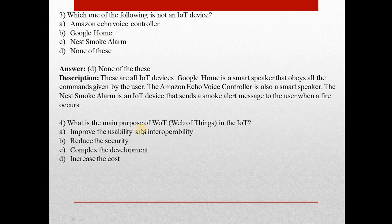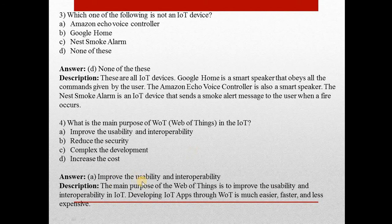Question four: What is the main purpose of WOT (Web of Things) in IoT? Answer is A — Improve the usability and interoperability. The main purpose of Web of Things is to improve usability and interoperability in IoT. Developing IoT apps through WOT is much easier, faster, and less expensive.